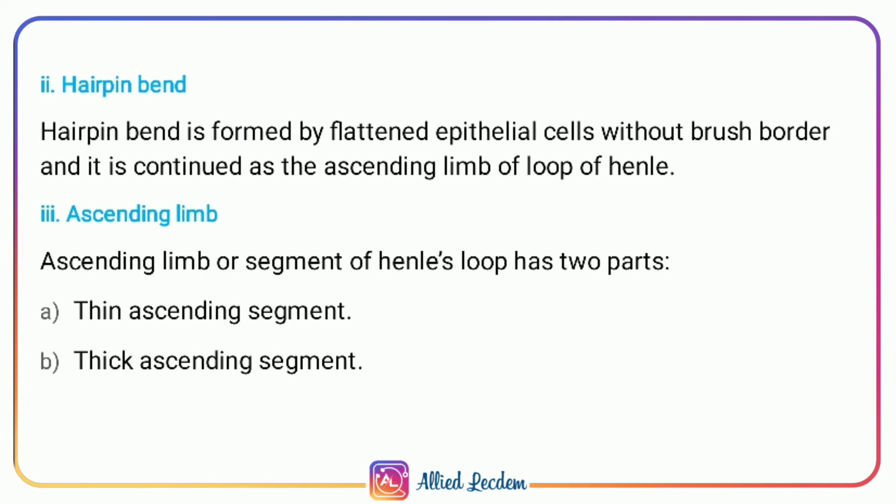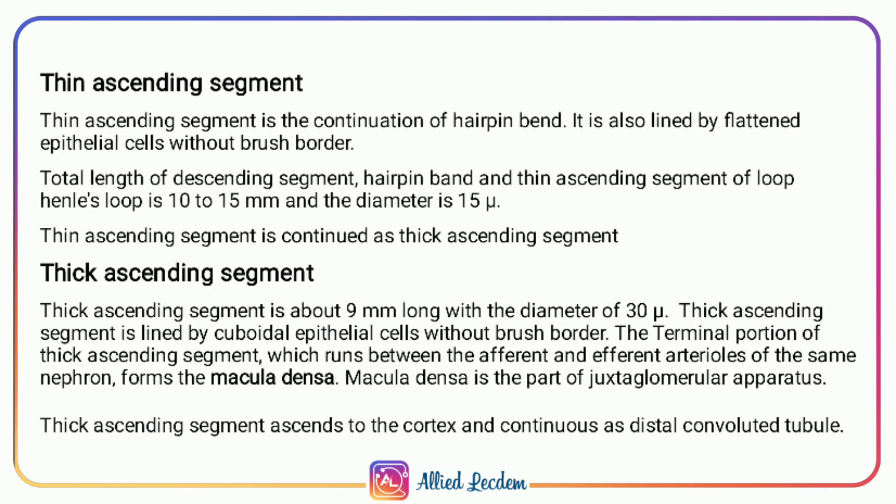The ascending limb of the loop of Henle has two parts: thin and thick ascending segments. The thin ascending segment is lined by flattened epithelial cells without brush border and is the continuation of the hairpin bend. The total length of the ascending segment, descending segment, and hairpin bend of the loop of Henle is 10 to 15 millimeters and the diameter is 15 micrometers.